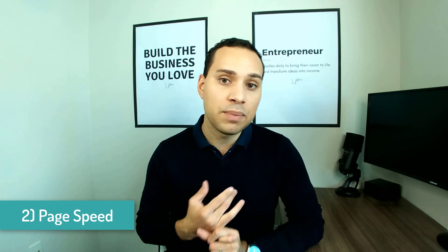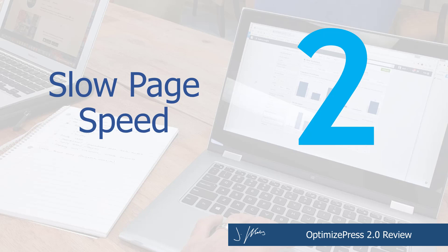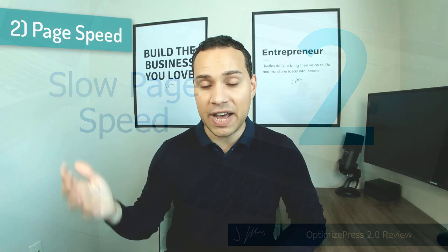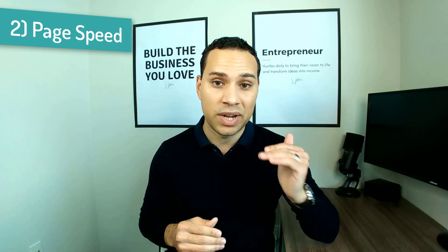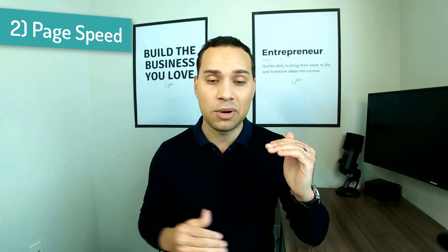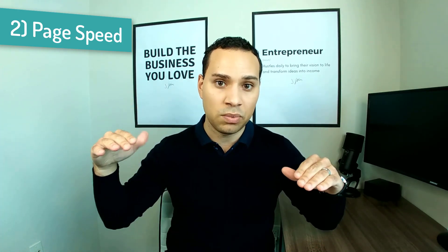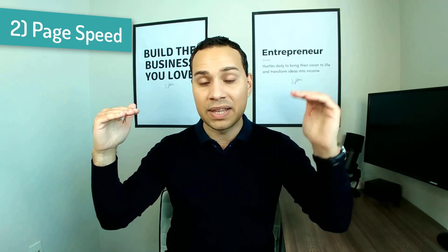Reason number two has to do more with WordPress itself, but it's something you need to keep in mind when using any WordPress theme — and that has to do with page speed. Unless you're paying for premium hosting or using a content delivery network, out of the box OptimizePress is going to be slower than things like Instapage, ClickFunnels, and Leadpages. That's simply WordPress hosting versus those software-as-a-service solutions that have optimized their servers and ensured faster page loads. There are some technical things you can do to bring OptimizePress up to par, but out of the box it will be slower — and that's true pretty much across the board with WordPress.